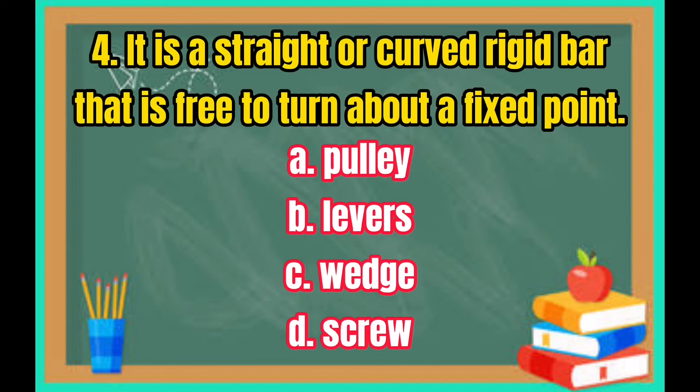Number 4: It is a straight or curved rigid bar that is free to turn about a fixed point. A. Pulley. B. Lever. C. Wedge. D. Screw.